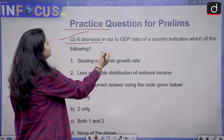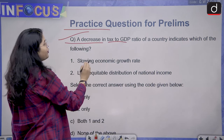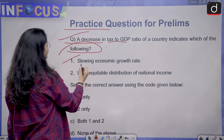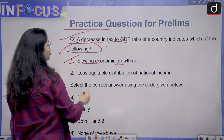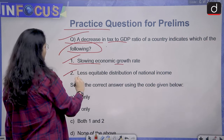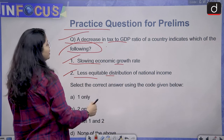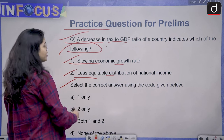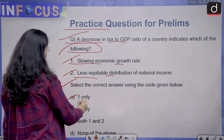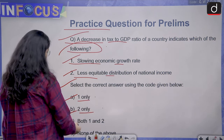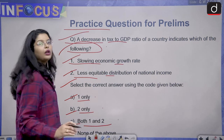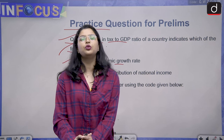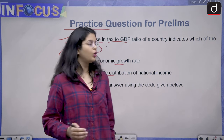The practice question for your Prelims examination is: A decrease in the tax-to-GDP ratio of a country indicates which of the following? Statement 1: Slowing economic growth rate. Statement 2: Less equitable distribution of national income. Select the correct answer using the code given below — Option A: 1 only, Option B: 2 only, Option C: Both 1 and 2, Option D: None of the above. Please give your answer in the comment box below.